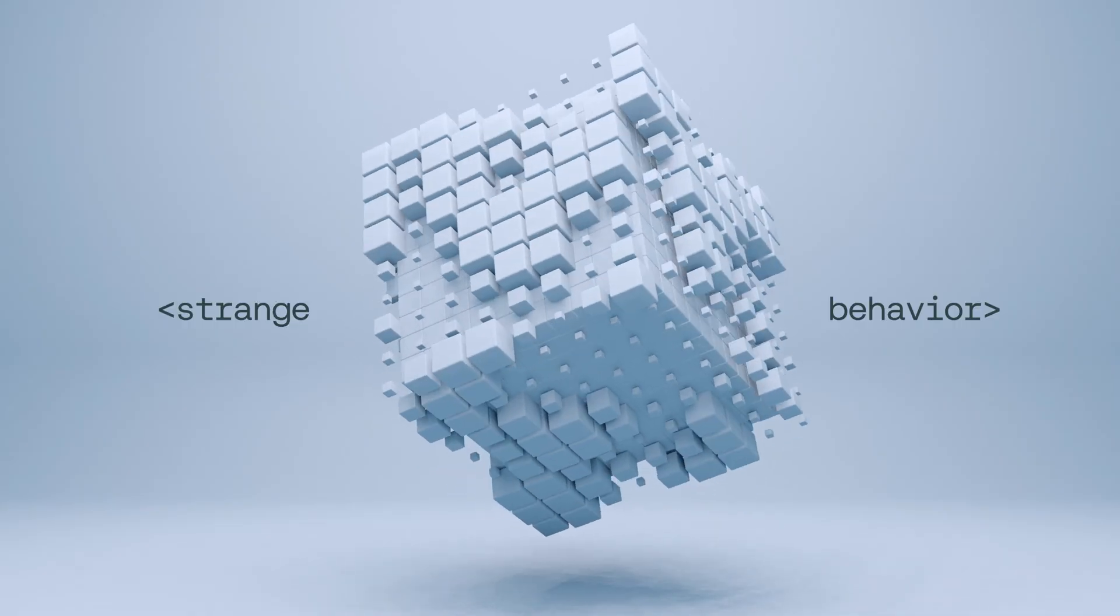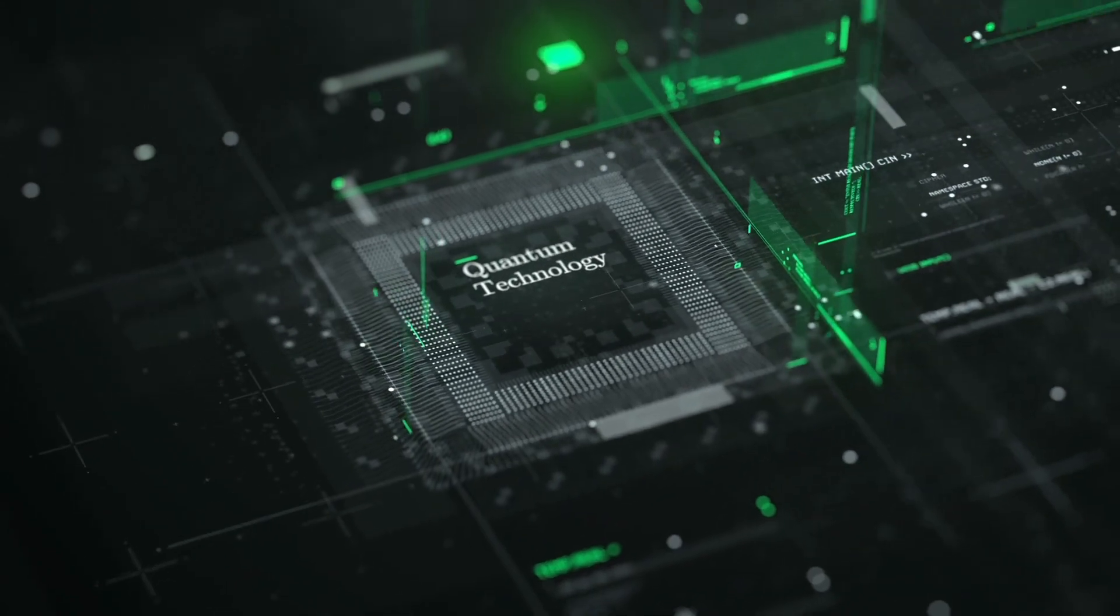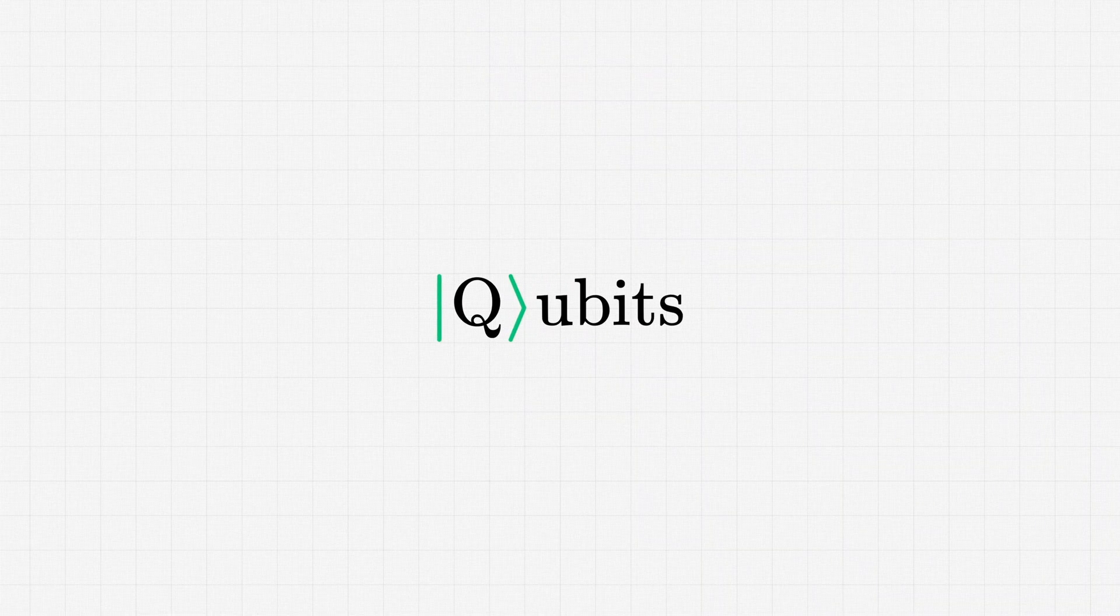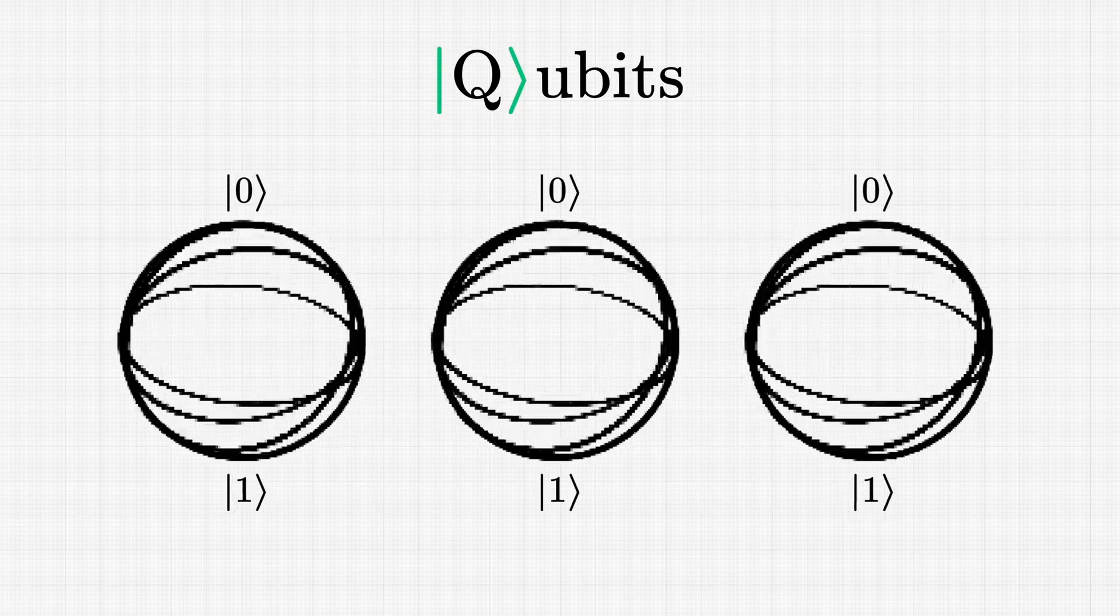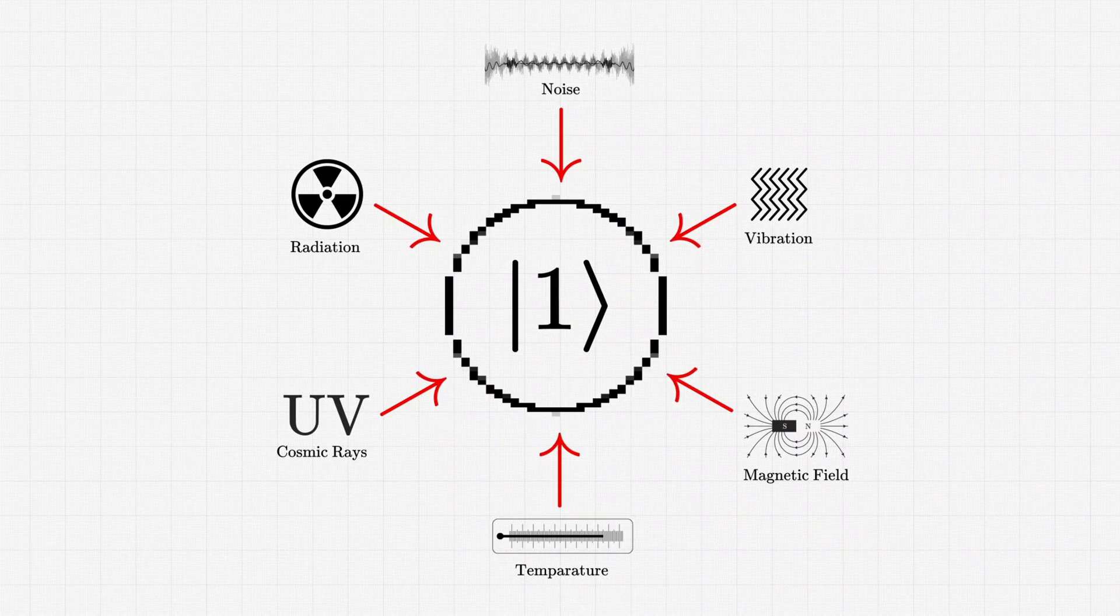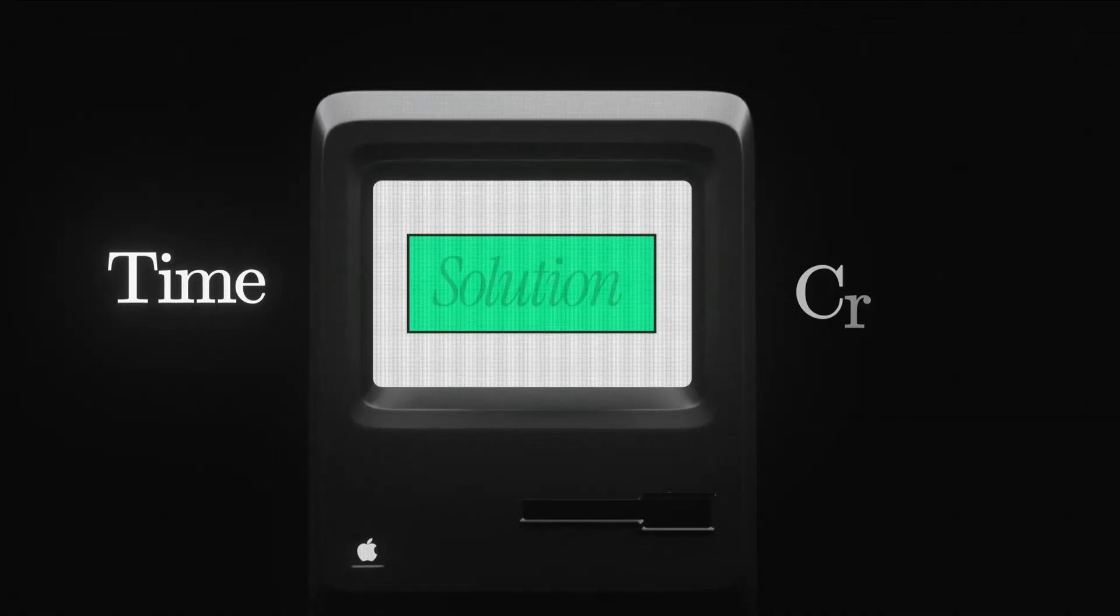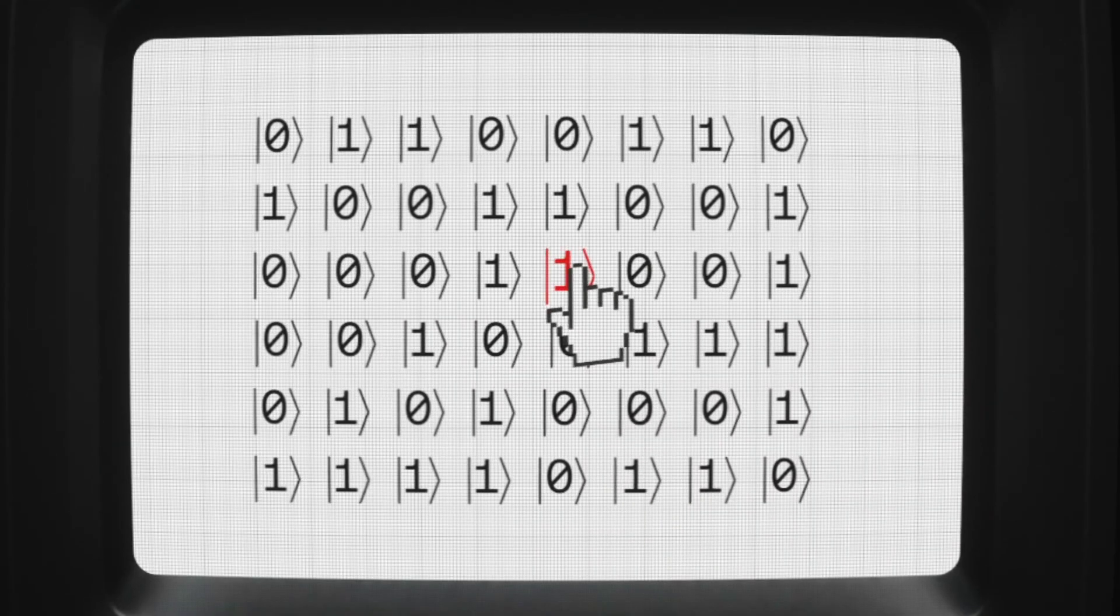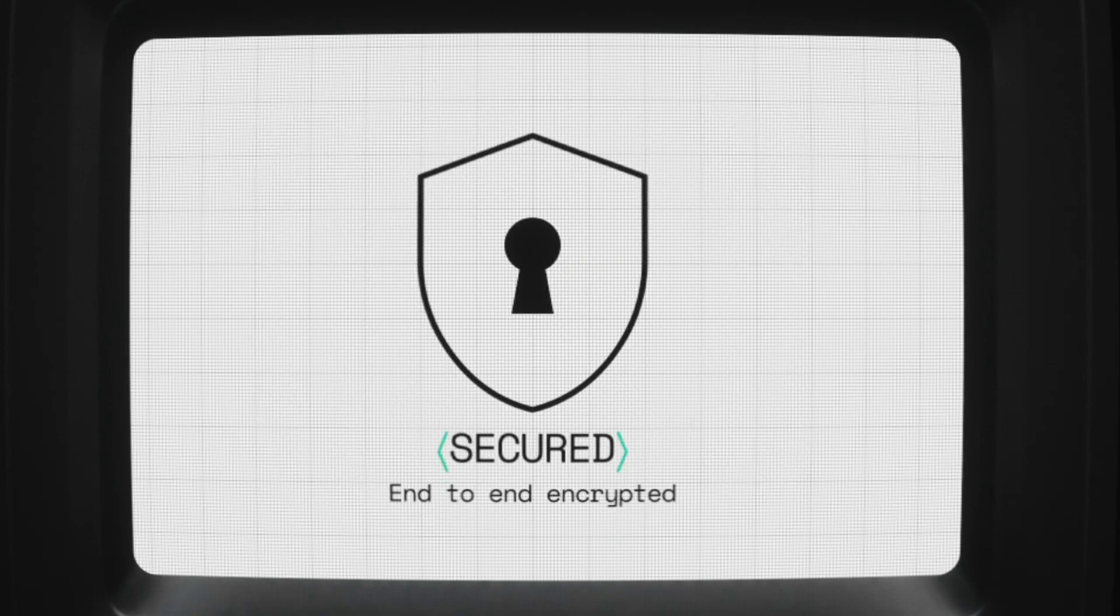This strange behavior could be the solution for the future of quantum technology. Quantum computers use qubits to process data and information, but qubits are extremely fragile. They lose their state quickly due to decoherence. But time crystals could be the solution here. Their incredible stability can protect quantum information without losing accuracy.